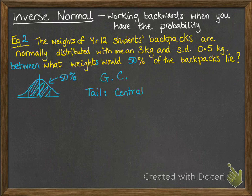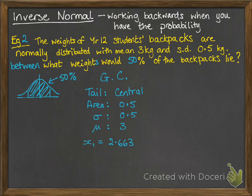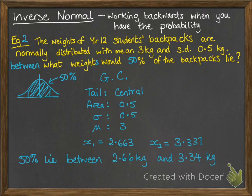On the buttons at the bottom of your screen you have F1, F2, F3 — choose the one for central. The area we're looking for is 50%, so enter 0.5. Then put in your values of sigma and mu again, and it will give you that the first value is 2.633 and the second value is 3.337. So 50% of these backpacks lie between 2.66 kilos and 3.34 kilos.